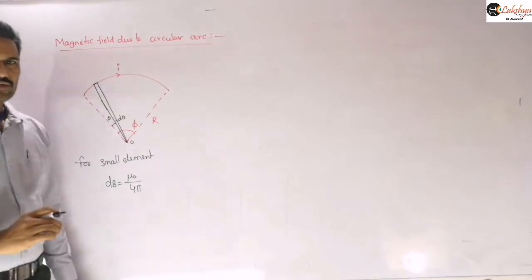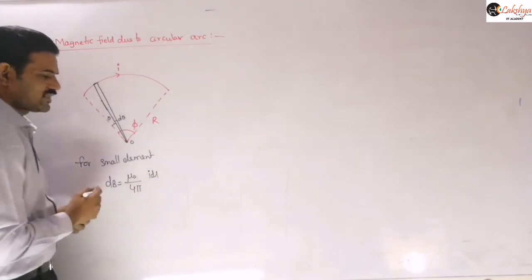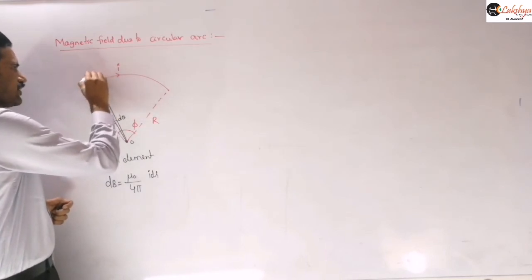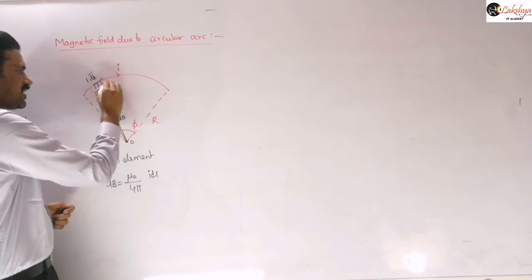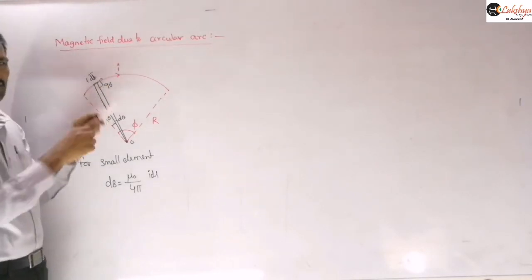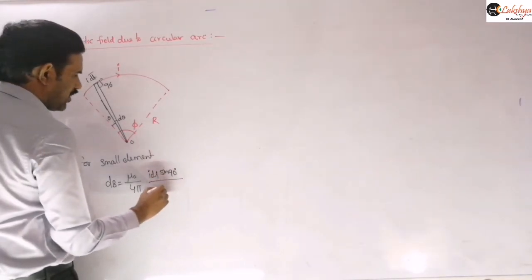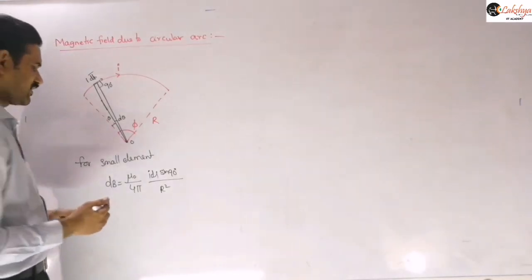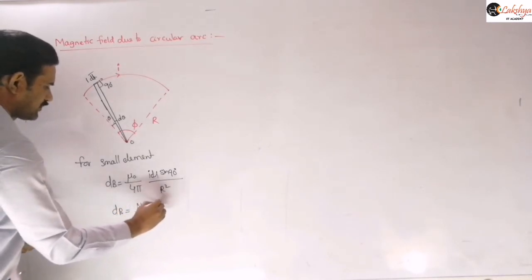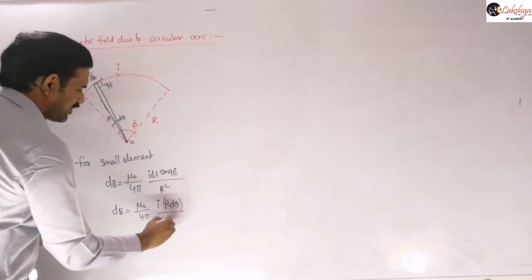Applying Biot-Savart law: dB = (μ₀/4π) × (I dl sinθ)/r². Here dl is along the tangential direction, and the radius vector r is perpendicular to dl, so the angle between them is 90 degrees. Thus sinθ = sin90° = 1. The length of the arc element dl = r dθ, so dB = (μ₀/4π) × (I r dθ)/r².